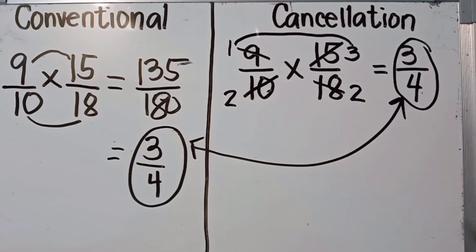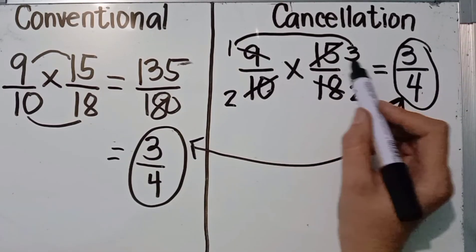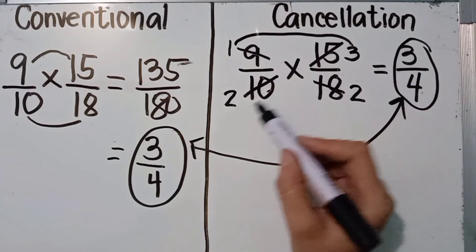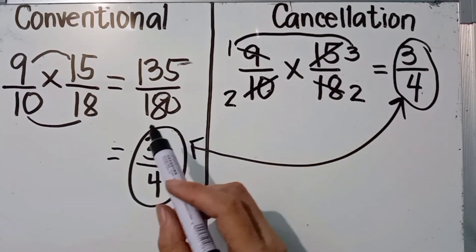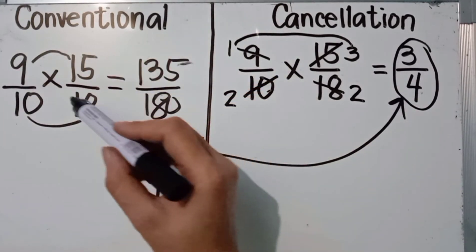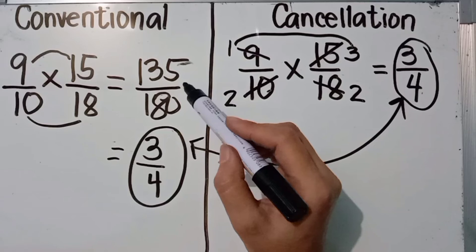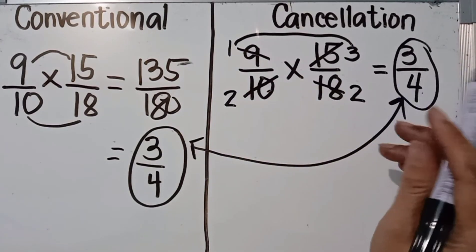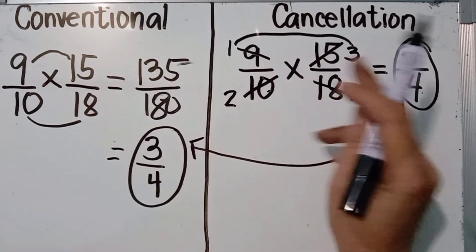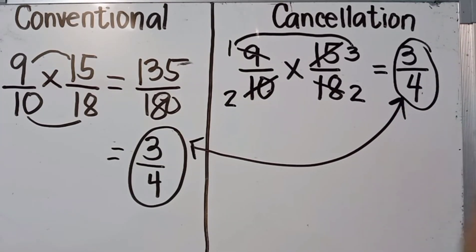The advantage of the cancellation method is that you end up multiplying smaller numbers. Unlike the conventional method where you multiply large numbers, in cancellation you've already reduced them. You may use whichever method is faster for you.